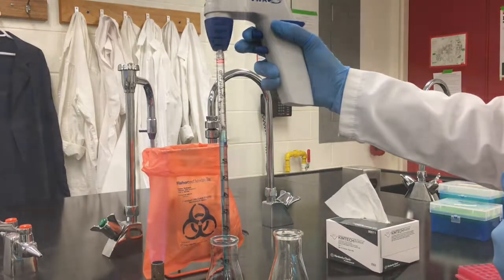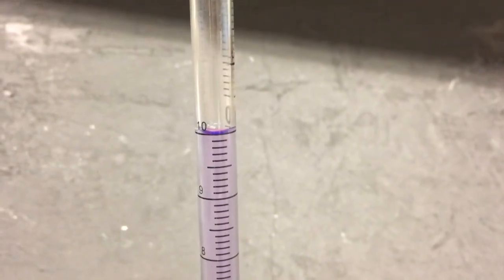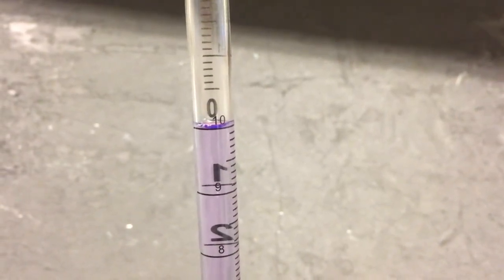Notice serological pipetter tips have both decreasing volume and increasing volume indications. When drawing up a liquid we can easily measure up to the 10 mil mark and then measure the volume dispelled by the decreasing values.